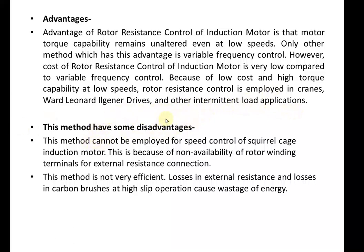The disadvantages of rotor resistance control: this method cannot be employed for speed control of squirrel cage induction motors because there is no provision of supply to the rotor — the rotor winding terminals are not available for external resistance connection. It is only applicable for slip ring induction motors. Also, this method is not very efficient — there are losses in the external resistances and in the carbon brushes, especially at high slip operations, causing a wastage of energy. It consumes and wastes more energy than the VFD control.